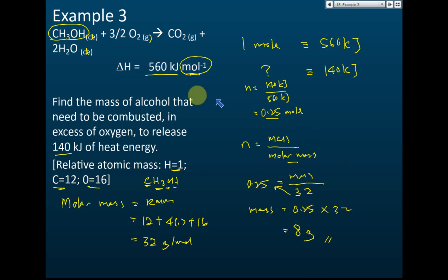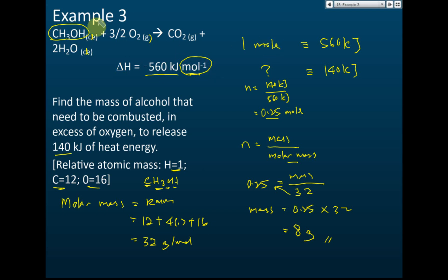This mole is for alcohol because the heat of combustion — 560 kJ/mol — means per one mole of the substance burned, and the substance burned is CH₃OH, the alcohol. So this 'per mole' means per one mole of alcohol, and therefore the number of moles calculated is also moles of alcohol.